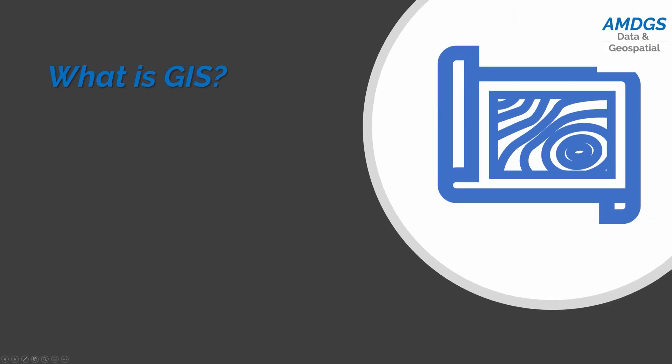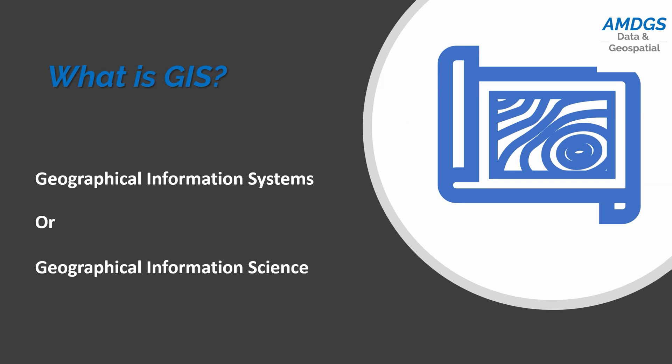So starting at the beginning — what is GIS? Hopefully if you're here you've probably come across the acronym before, and actually the acronym GIS can be used in a couple of different ways. The most common, and the one I'm going to be referring to here, is geographical information systems, which focuses on using software tools to look at, analyze, and visualize geospatial data. It's focused on that computing side of things.